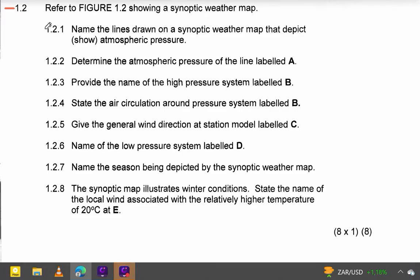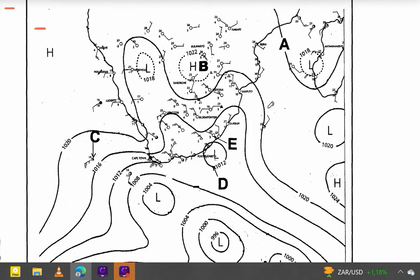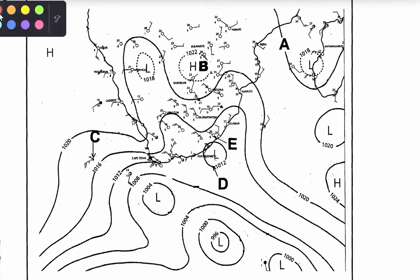Let's come to our very first question, 1.2.1: name the lines drawn on a synoptic weather map that depict or show atmospheric pressure. So we have to name these lines. Don't confuse these lines on a synoptic weather map with contour lines, because most students confuse the lines from synoptic weather maps with contour lines.